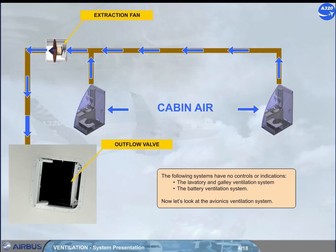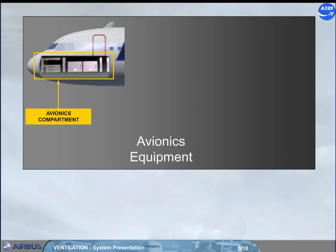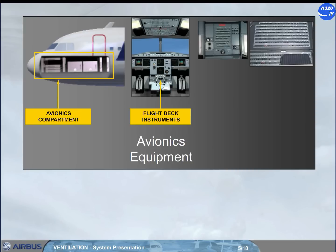Now, let's look at the avionics ventilation system. The avionics ventilation system provides cooling air for the avionics equipment. This equipment includes the avionics compartment, the flight deck instruments, and the circuit breaker panels.